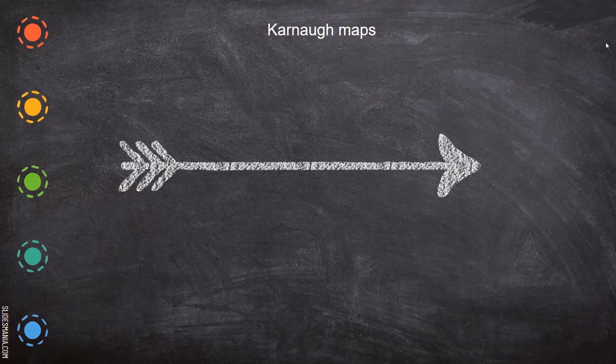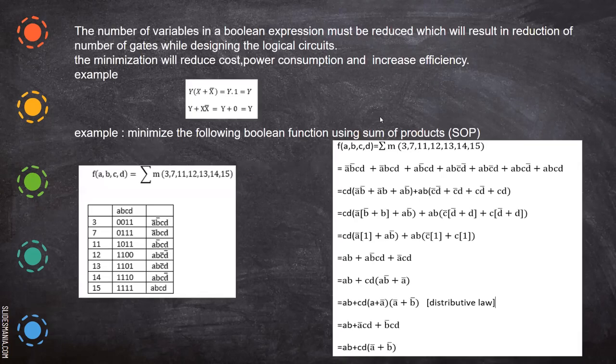Karnaugh map is another method through which we can reduce variables and the equation. Before going into that, I'm going to give a small example — you have already seen reduction of equations using Boolean laws — and then we will go for the Karnaugh map.